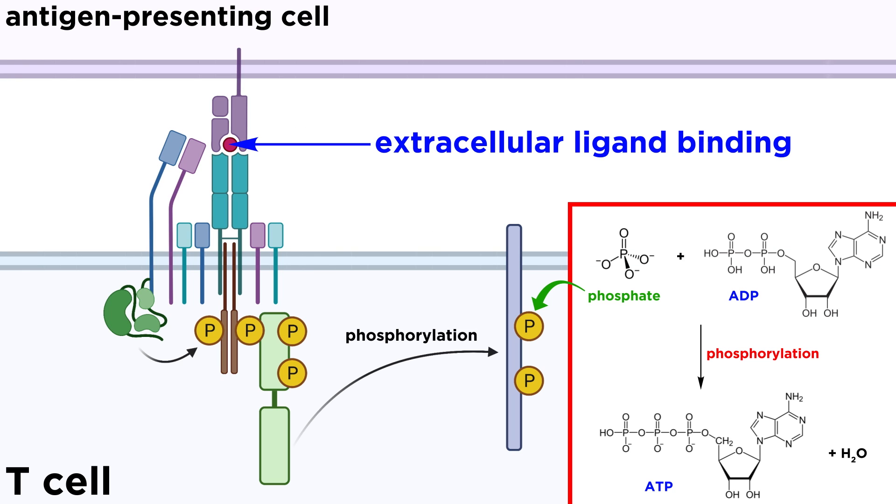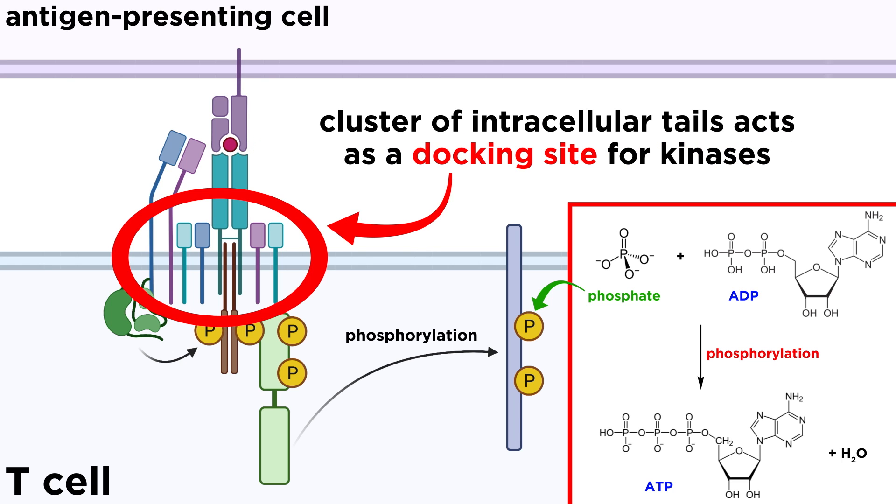Extracellular ligand binding can cause receptors and co-receptors to physically cluster within the cell membrane, bringing together the intracellular tails of receptors and co-receptors to act as docking sites for protein kinases.